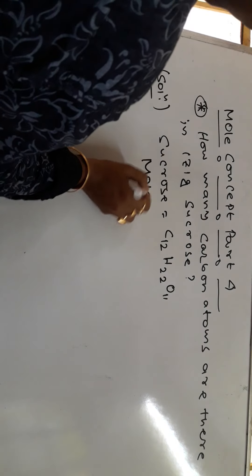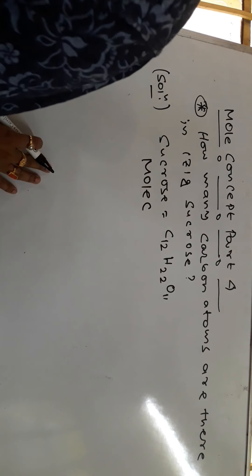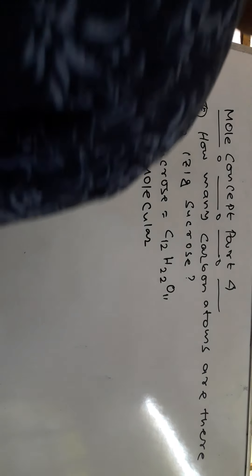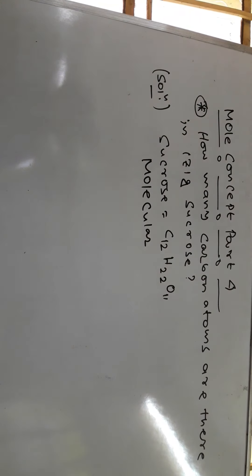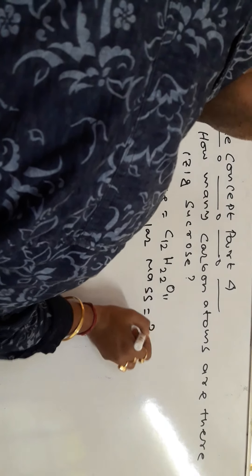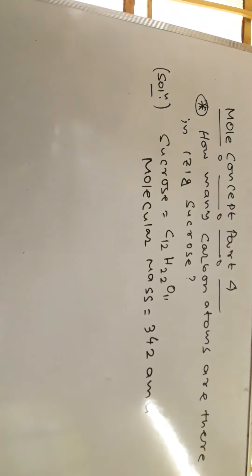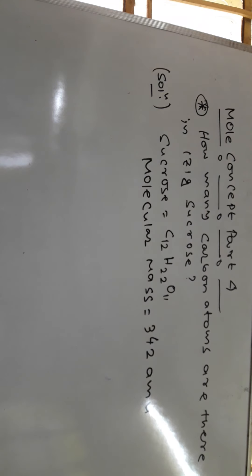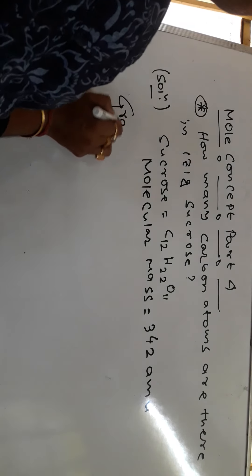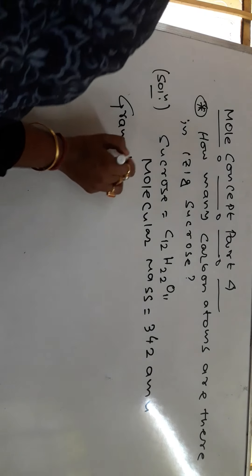Let's solve this. Sucrose is C12H22O11. What is the molecular mass of this? I'm not jumping any step because I don't want you to miss the first problem and lose some concept. The molecular mass equals 342 atomic mass units. If you calculate it, it will be 342 — that is sucrose, C12H22O11, sugar.